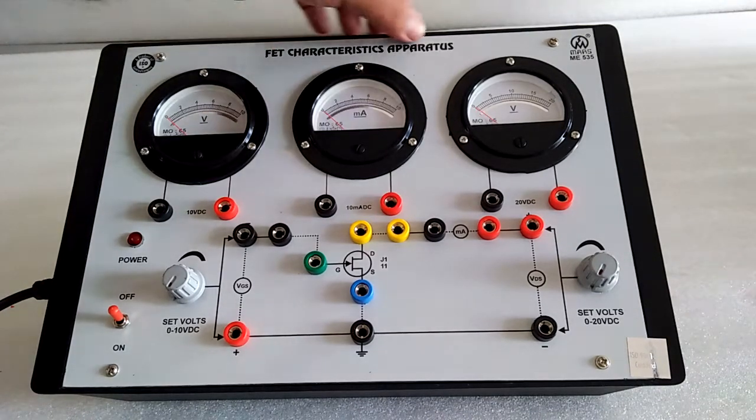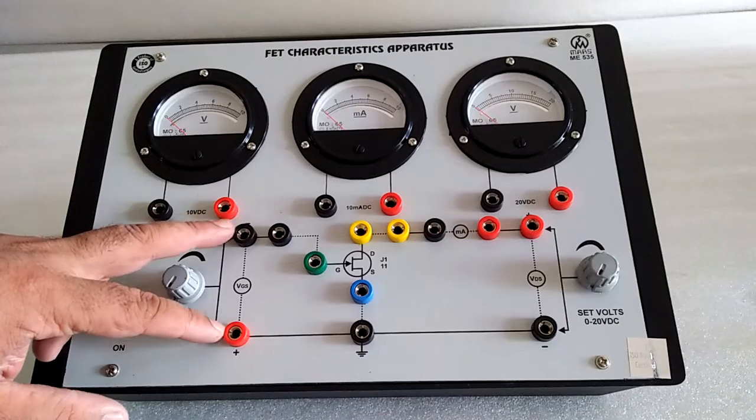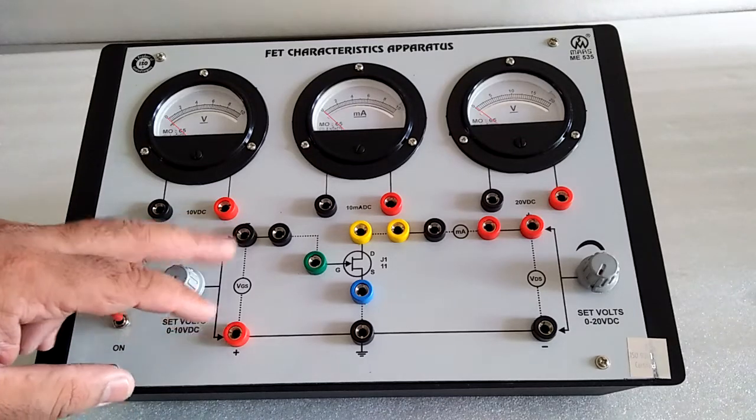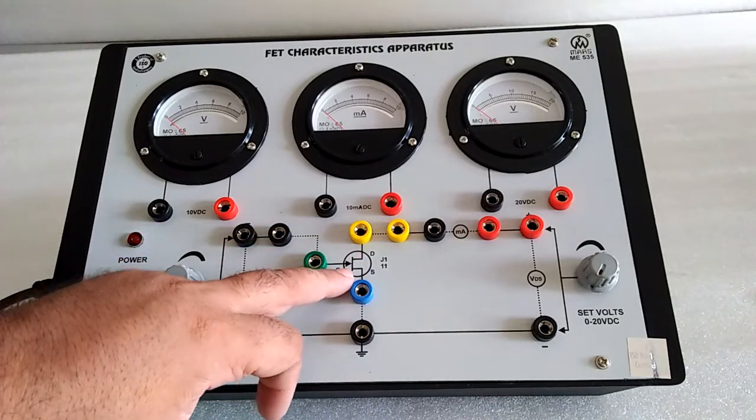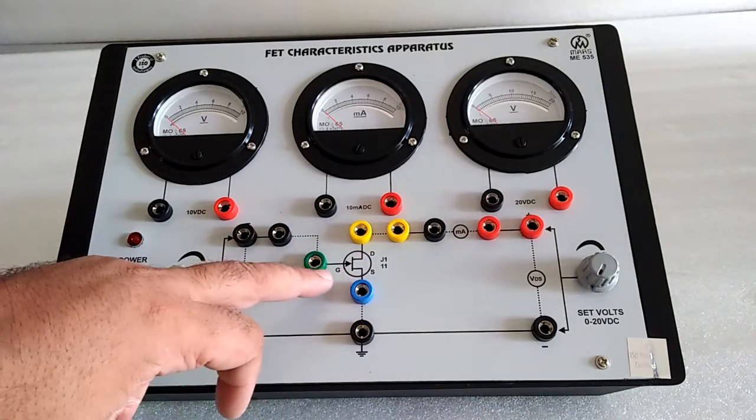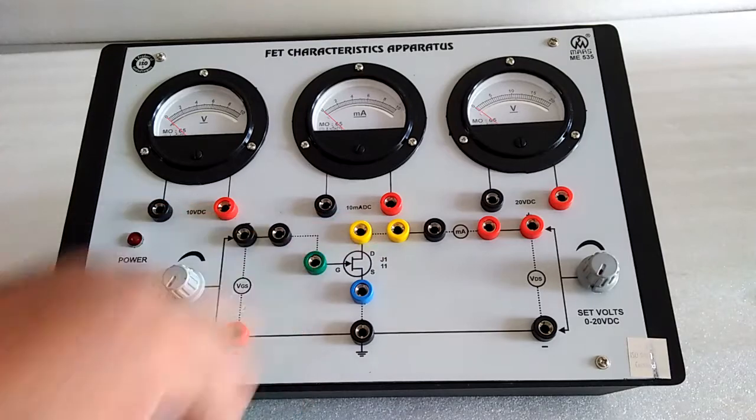This is the FET characteristic apparatus. Here we have the voltage VGS, here is the VDS. Here is the MOSFET, we have used PFW10, gate, source and drain.